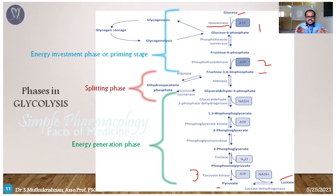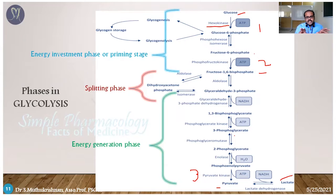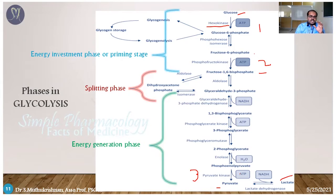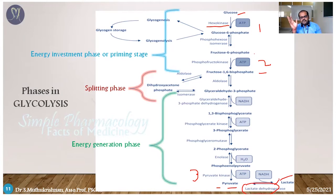The steps in glycolysis: glucose is converted to glucose-6-phosphate by hexokinase, then to fructose-6-phosphate by isomerase. Then it undergoes the second irreversible step to fructose-1,6-bisphosphate, which splits into dihydroxyacetone phosphate (DHAP) and glyceraldehyde-3-phosphate. Further dehydrogenation gives 1,3-bisphosphoglycerate, then 3-phosphoglycerate, 2-phosphoglycerate, and finally phosphoenolpyruvate. Phosphoenolpyruvate is converted to pyruvate by pyruvate kinase. In the presence of lactate dehydrogenase, pyruvate is converted to lactate.